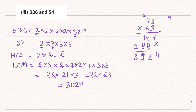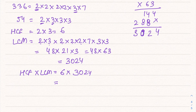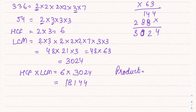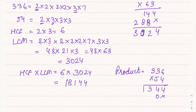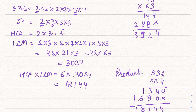Verification: HCF × LCM = 6 × 3024 = 18144. Product of numbers = 336 × 54 = 18144. Both products are equal, so this is verified.